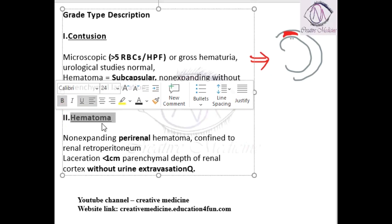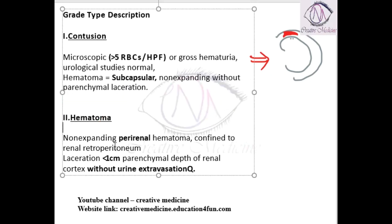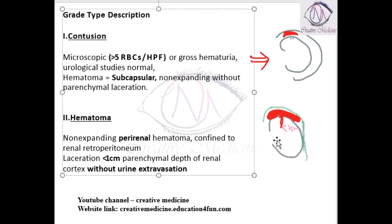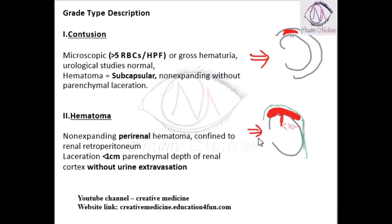Then we have Grade 2, which is hematoma. In Grade 2, a perirenal hematoma is seen around the kidney. This is also non-expanding and confined to the renal retroperitoneum. It is associated with a laceration less than 1 centimeter in the parenchymal depth of the cortex, and there is no urinary extravasation. So this is Grade 2.